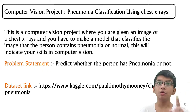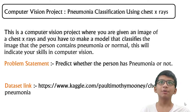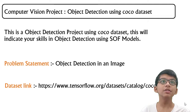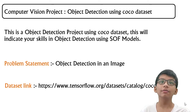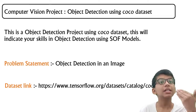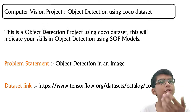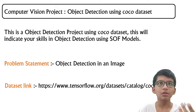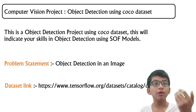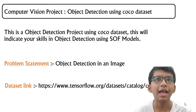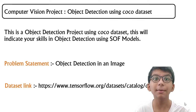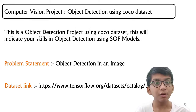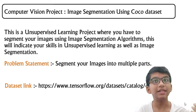The next project is object detection using the COCO dataset, which you can find in the TensorFlow datasets library. This indicates your skills in object detection using state-of-the-art models. You're given an image and must detect objects within it — like a chair, pedestrian, or other items. You can make it real-time, video-based, or a simple image object detection system.